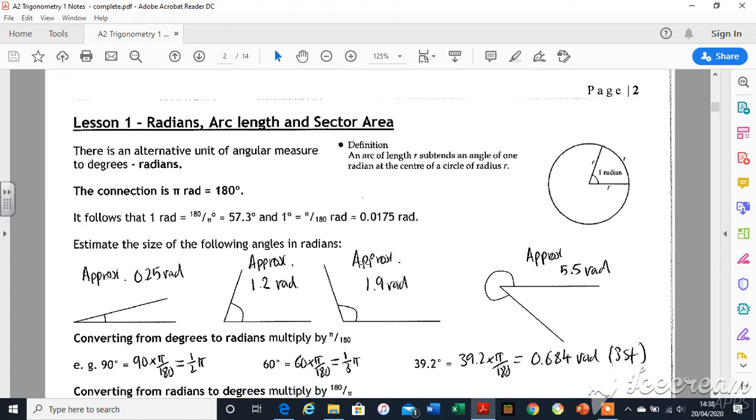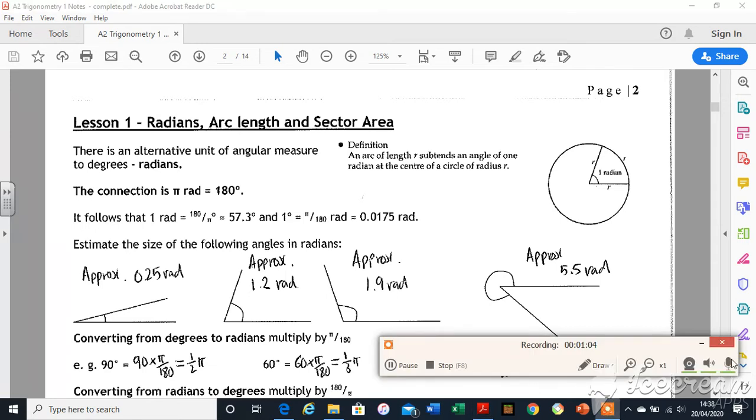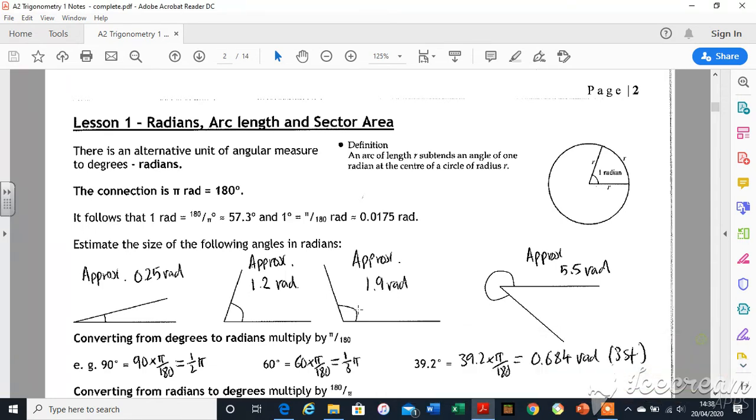So instead of going between 0 and 360 in degrees, it goes between 0 and 2π in radians. I'm a little bit paranoid that it's not working properly, so I'm just checking the volume levels are fine, that's cool. I think I can highlight as well to give you a good idea of what I'm doing. You've always known about radians, but you just haven't realized because the circumference of a circle is C equals 2π times by the radius.